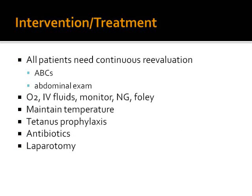How do we treat abdominal injury patients? All patients need continuous re-evaluation, so we put them on continuous monitoring. We need to reassess airway, breathing, and circulation frequently, and repeat abdominal exam — especially in patients for whom we are considering conservative management. We need to give them oxygen and IV fluids and monitor them. We must maintain room temperature and prevent hypothermia. Tetanus prophylaxis is important, and we must also give antibiotics, especially broad-spectrum antibiotics covering gram-positive, gram-negative, and anaerobic organisms because of the risk of gut injury.